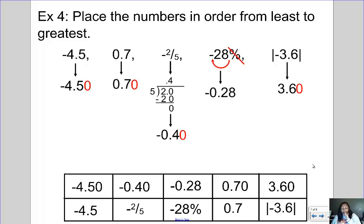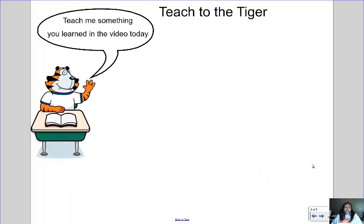Keep in mind that integers are positive and negative whole numbers. When finding absolute value, it's the distance from zero. If you're comparing and ordering, change everything to a decimal first. Alright, don't forget to teach to the tiger!